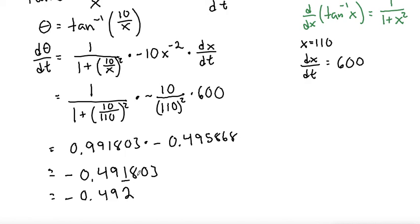And even though this answer is negative, I don't think they're wanting us to include the negative in the answer because it's only asking us how fast the angle will be changing. It doesn't ask us to tell which direction it will be moving. So I think that we can just plug that in as 0.492 as a positive answer.